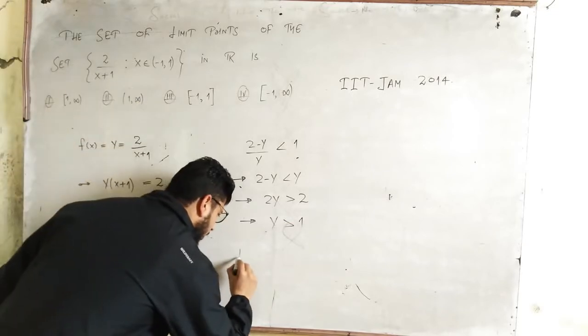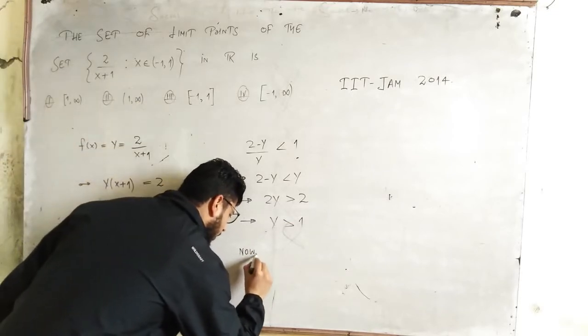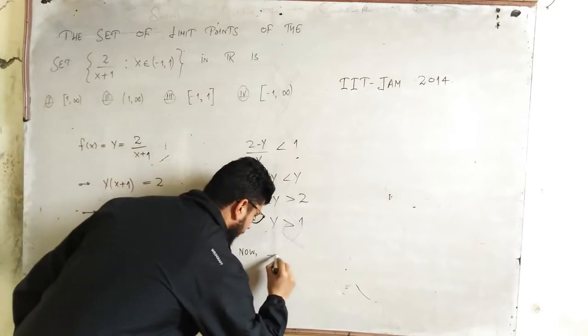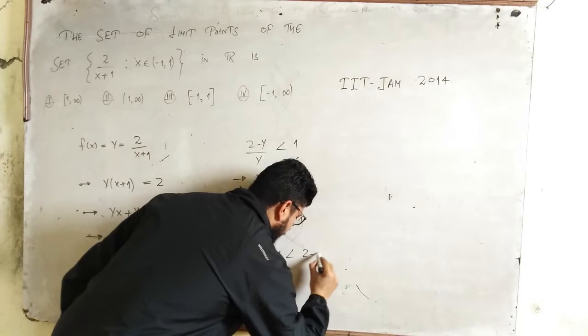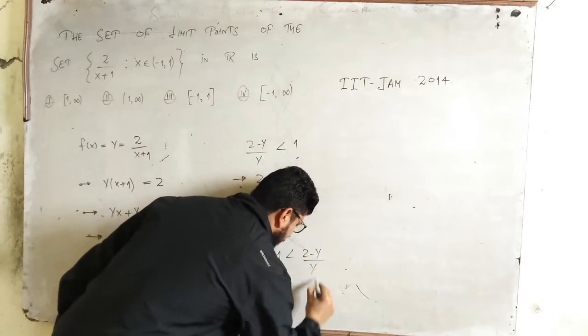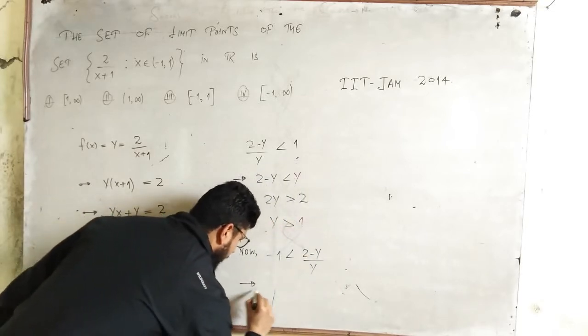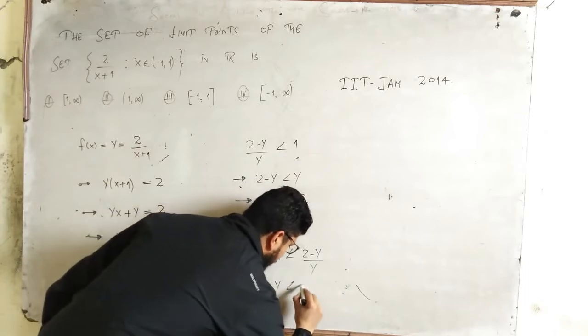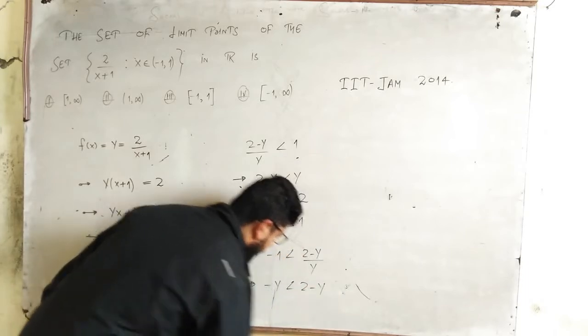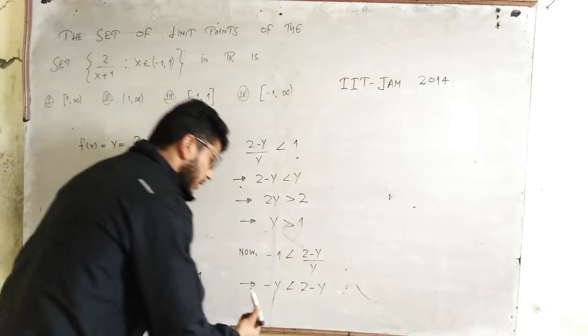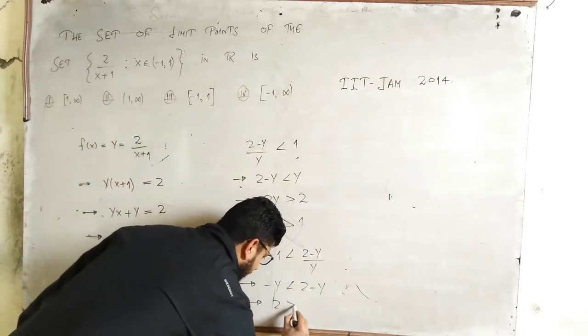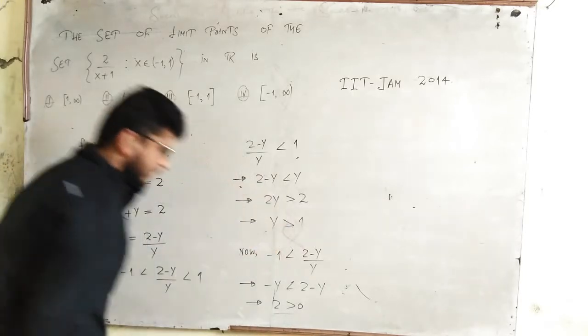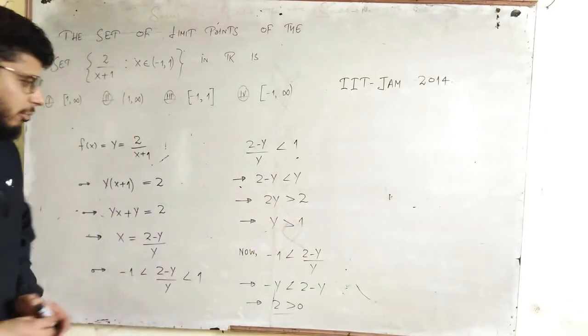Now when you take this inequality: -1 < (2-y)/y, what you will get is -y < 2-y. Now this implies 2 > 0, which is true, but you cannot conclude anything from this.